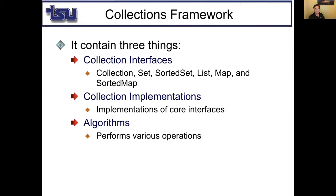Now we will talk about the Collections framework. There are three things: a bunch of interfaces — collection, set, sorted set, list, map, and sorted map — a bunch of classes implementing those interfaces, and algorithms those classes provide, such as add, remove, and search.